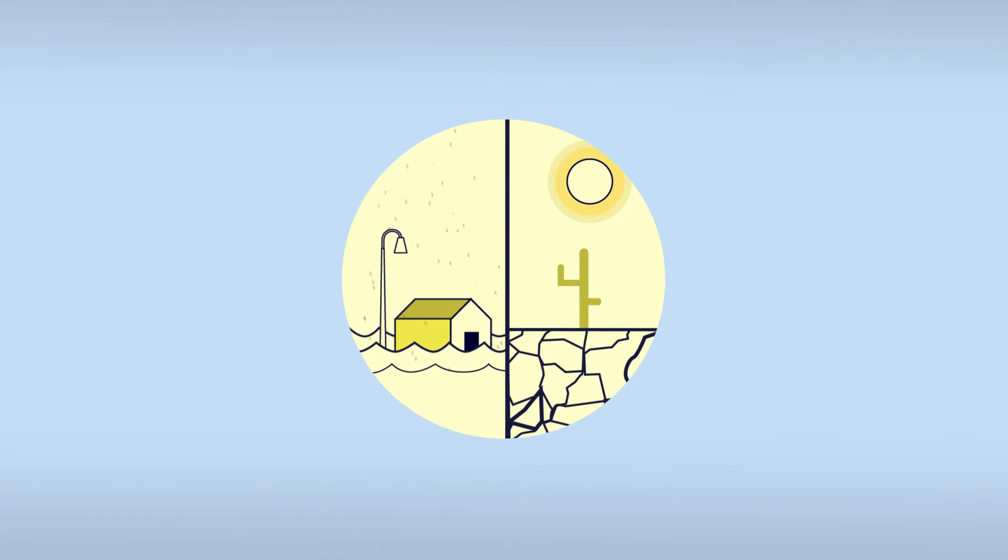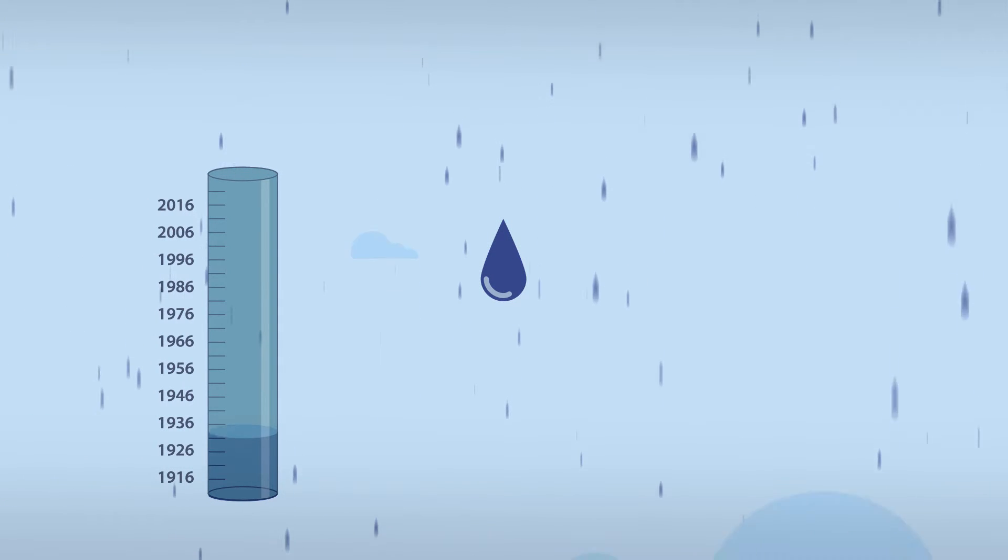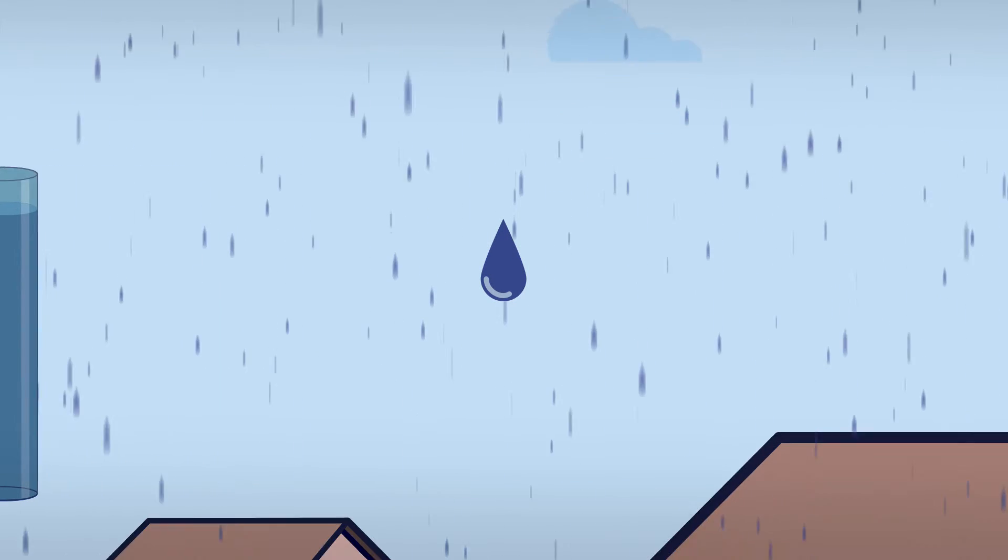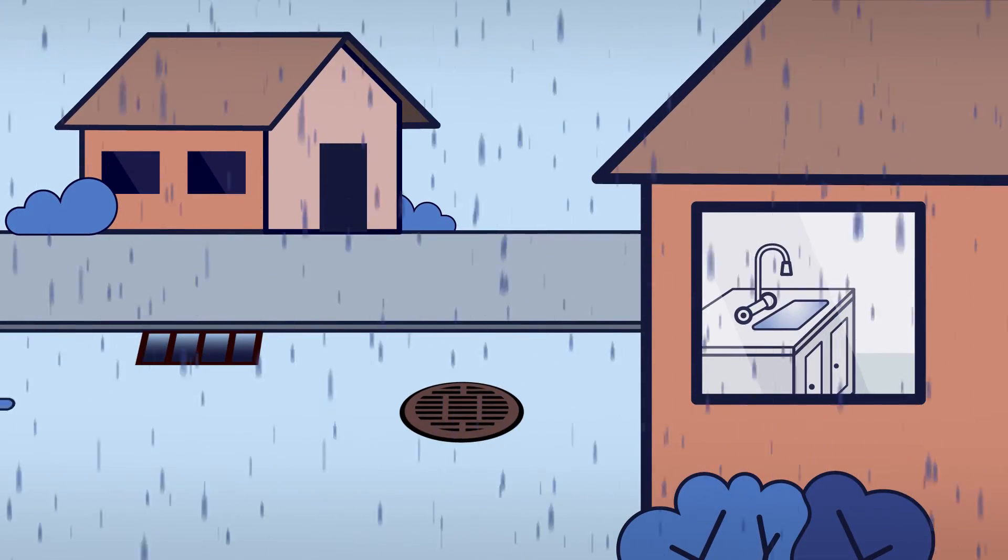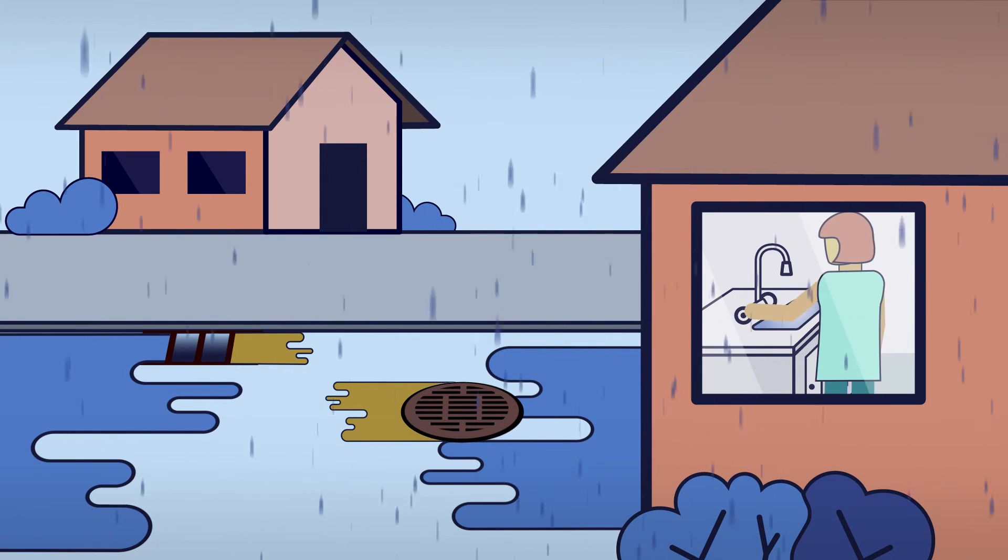Climate change leads to a drier climate in some parts of the world, and a wetter climate in other parts. The amount of rainfall in Norway has increased over the last 100 years, and once it rains, it rains a lot. This trend increases the risk of flooding and poorer quality of the water.